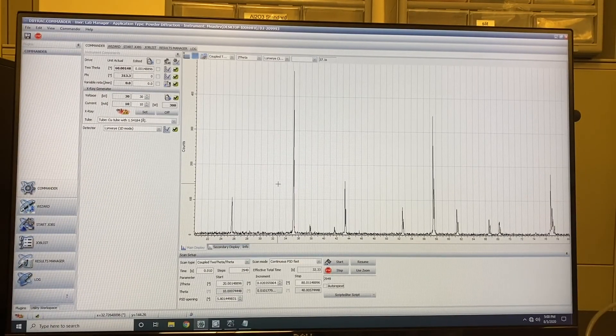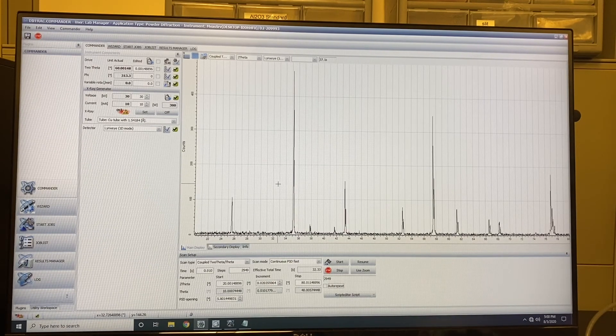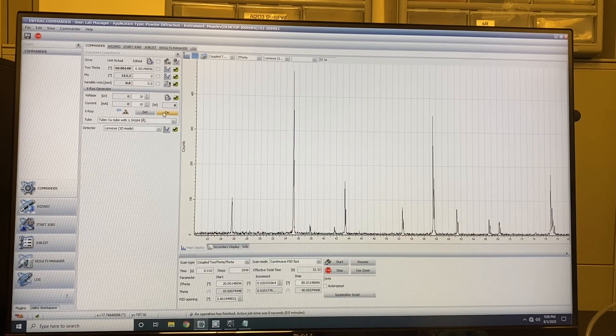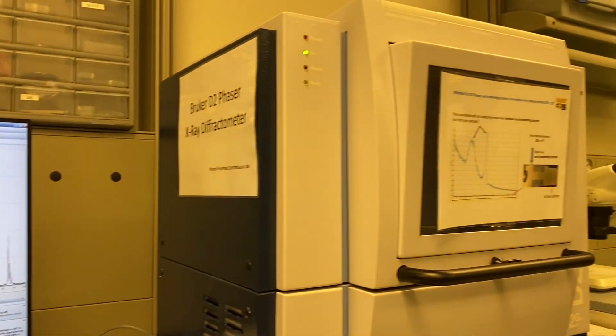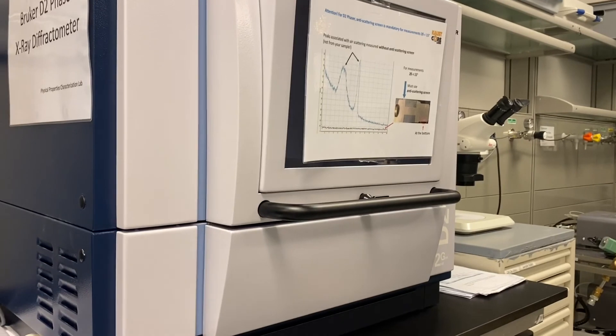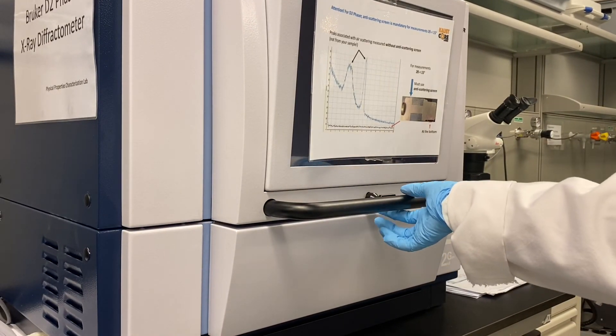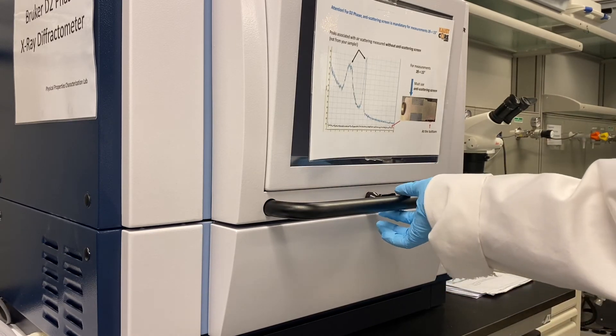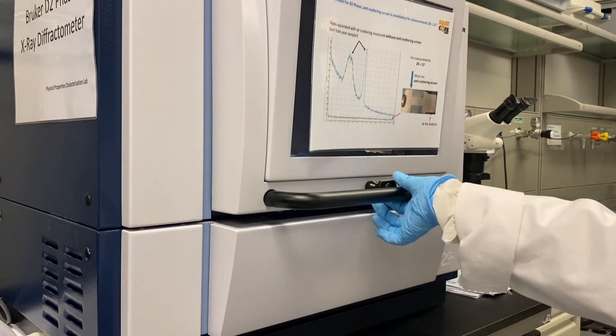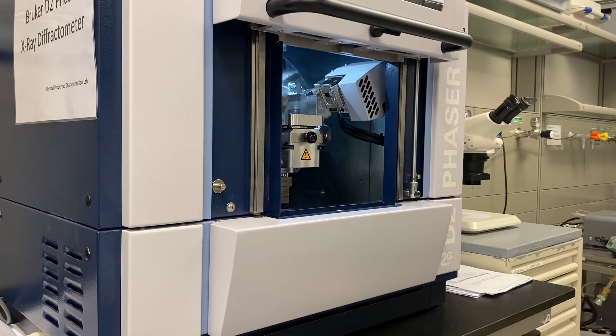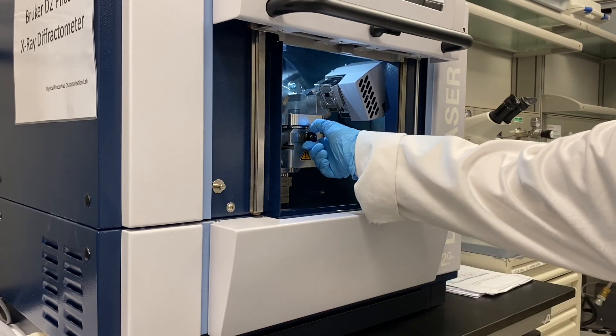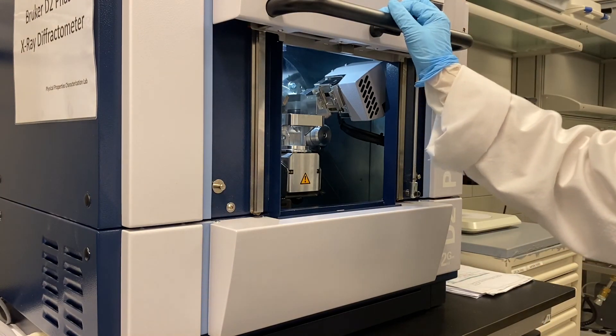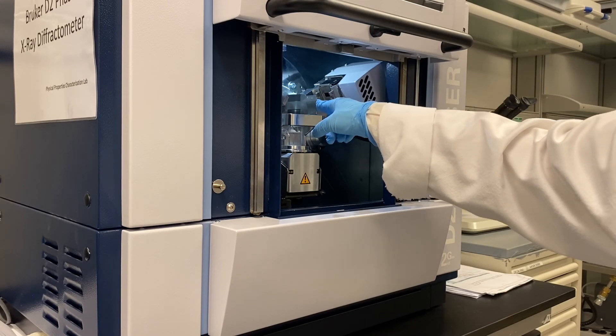After you save the data, you want to measure another sample or you want to take your sample out. The first thing is that you should make the X-ray off here. And then you can see the X-ray is off. Then you can open the door and take your sample out. It's the same operation with the mounting sample. Then close the door. The knife edge is always here. Don't remove it out.